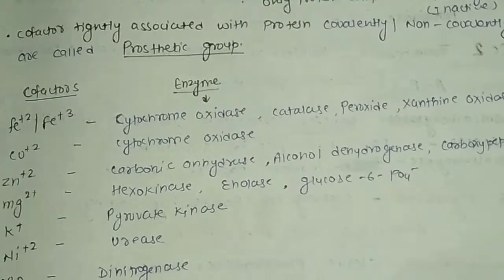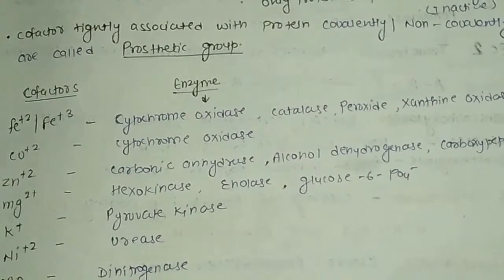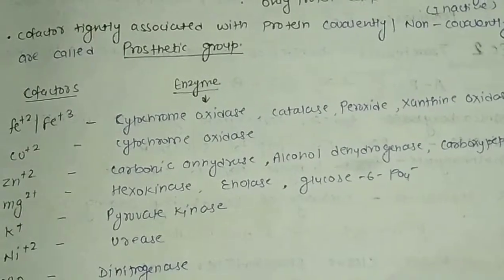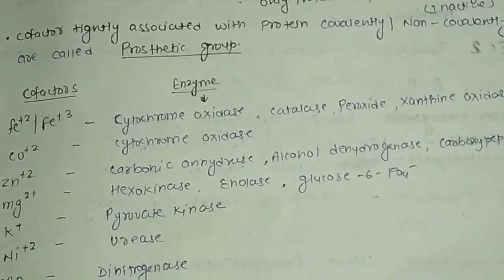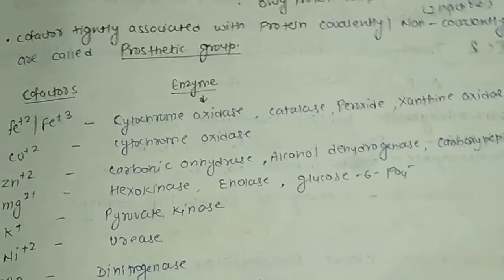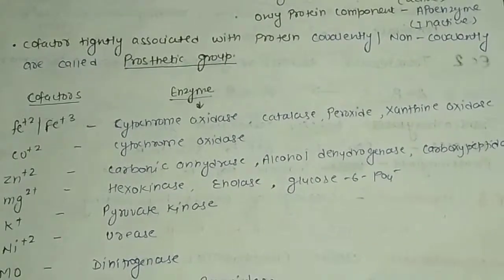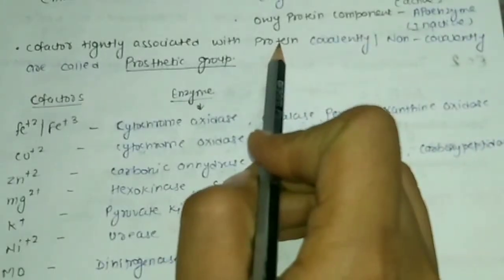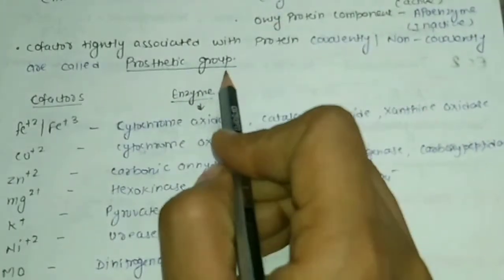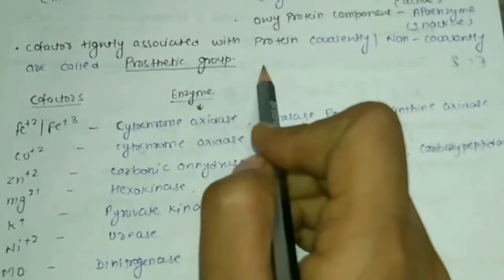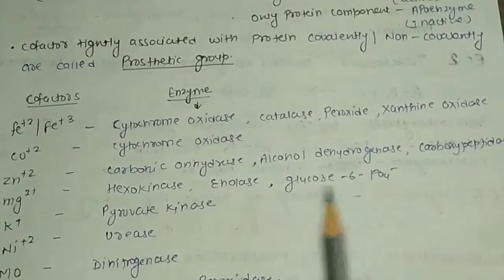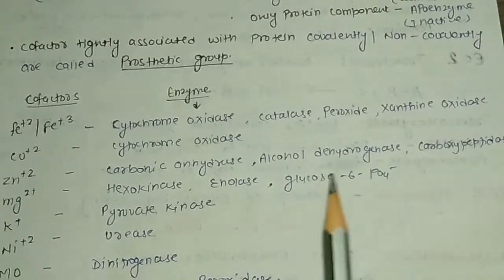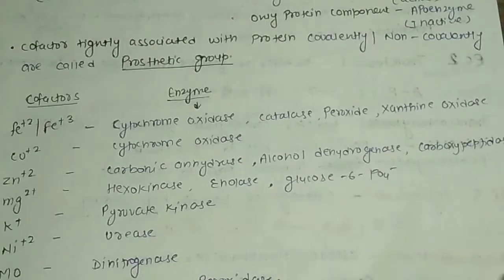Now let's talk about cofactors that are tightly associated with proteins, either covalently bound or non-covalently bound. If cofactors are tightly bound with the enzyme protein, we call them prosthetic groups. These are the two types of cofactors associated with protein covalently and non-covalently.